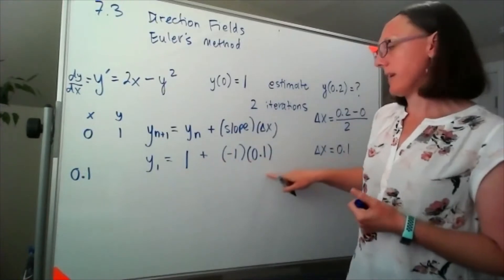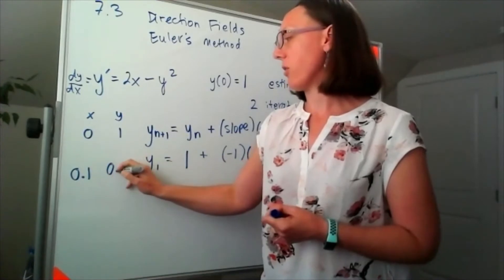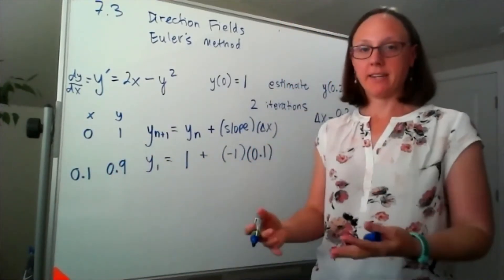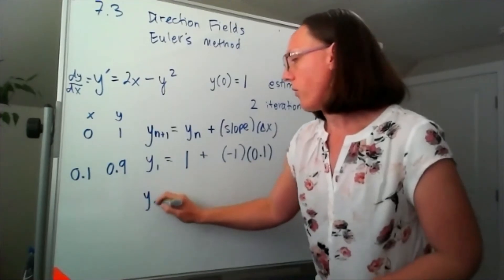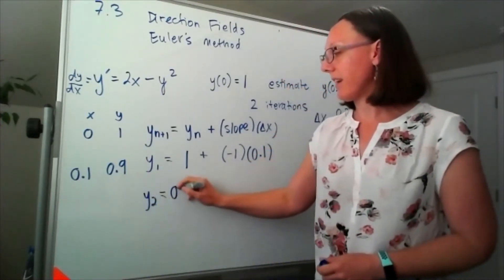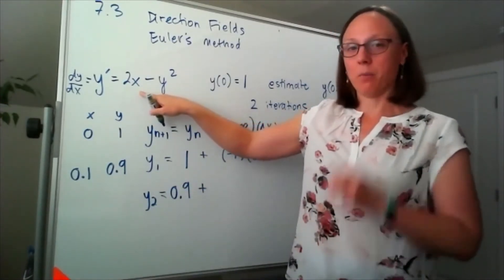this has given me my next y-value, so 1 minus 0.1 would put us at 0.9. That's just one step, but I need to take one more. So after two iterations, I'm standing at 0.9, I now need my slope at that point.